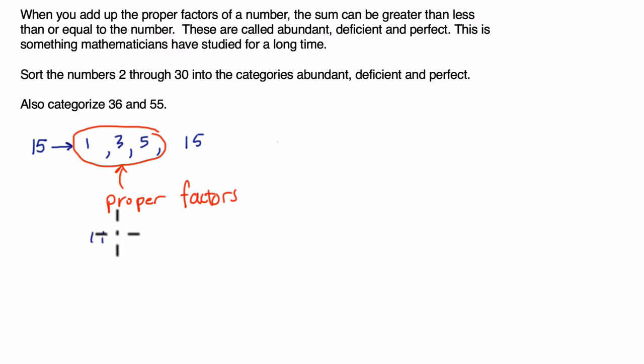So in this case for 15, 1, 3, and 5 would be the proper factors. And what they are saying is if you add up these proper factors, if you find the sum, if we do 1 plus 3 plus 5, we get 4 plus 5 is 9. If we look at this sum and compare it to the actual number, in this case 15, we can categorize the number. Since 9 is less than 15, the sum of the proper factors is less than the number, we would call this deficient. So 15 is deficient.